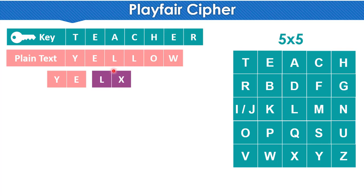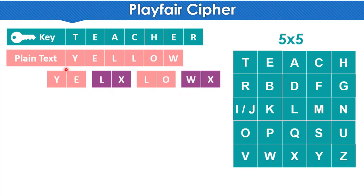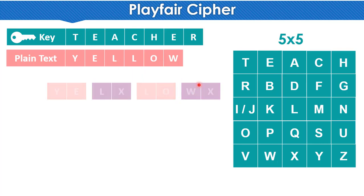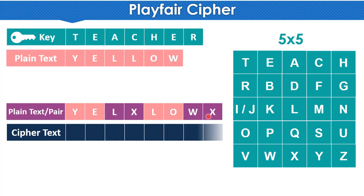The rule is: whenever two same alphabets come together, we take the first one and add X after it to make the pair. So L pairs with X. Then the next pair is L and O — these are different letters so they pair normally. Finally, W is left alone at the end, so we add X after it to complete the pair: W and X. So our pairs are: YE, LX, LO, WX.